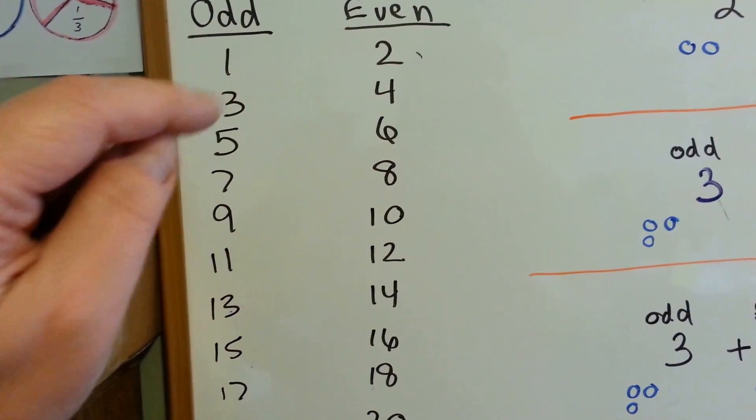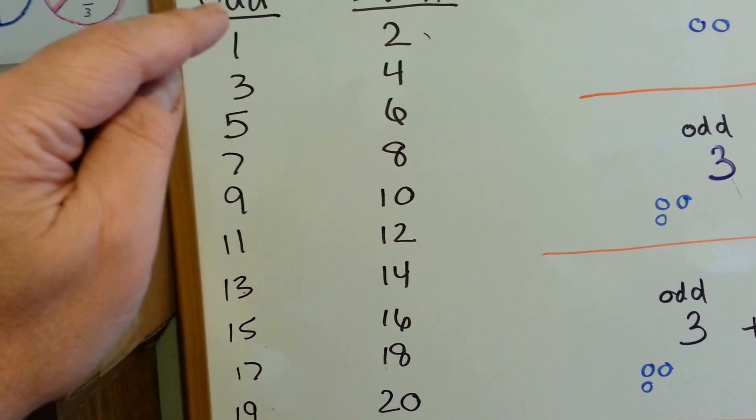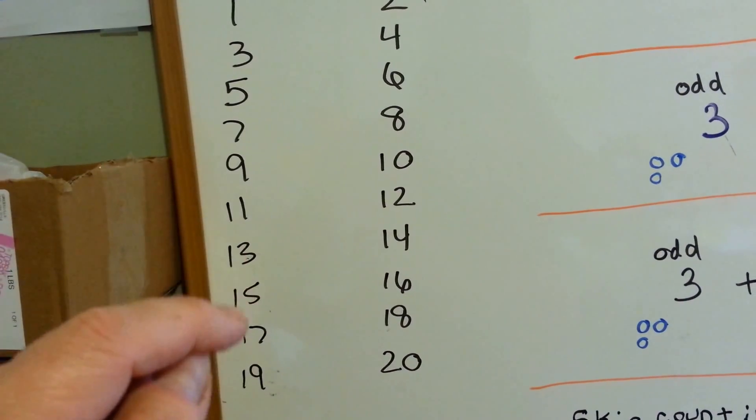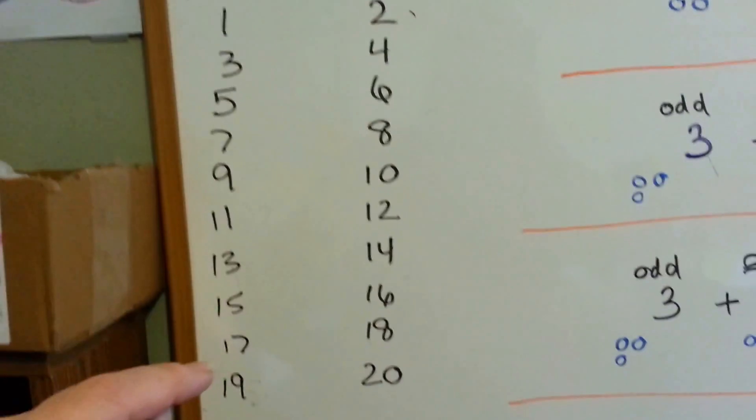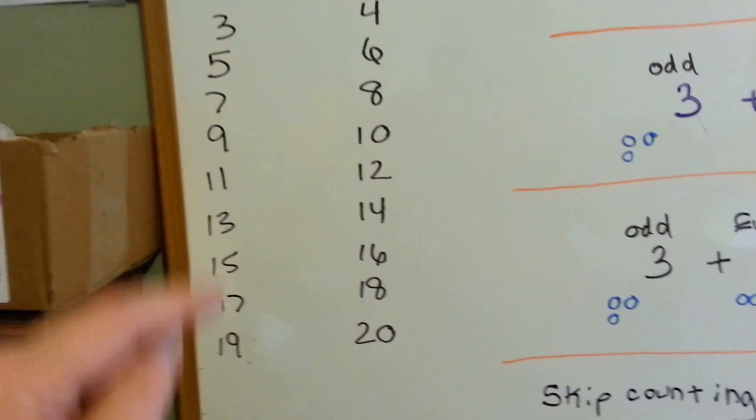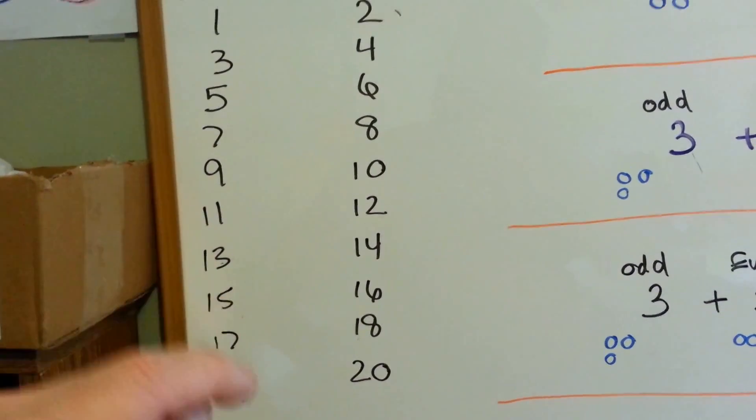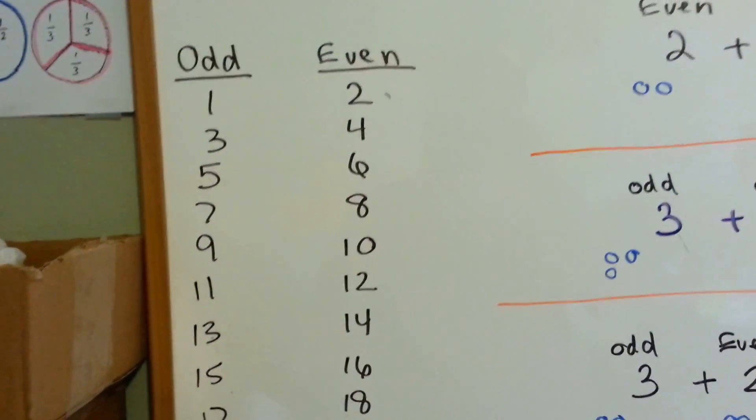If any number ends with a 1, 3, 5, 7, 9, it's odd. Look, 1, 3, 5, 7, 9. Even if we got into the 20s or 30s it would still end with a 1, 3, 5, 7, 9 and those would be the odd numbers.